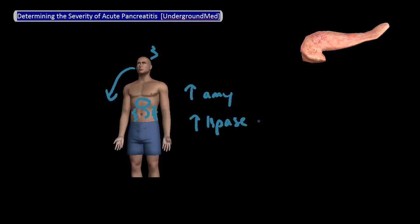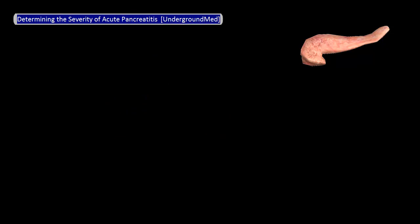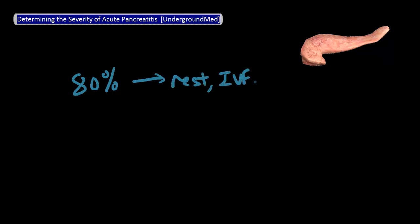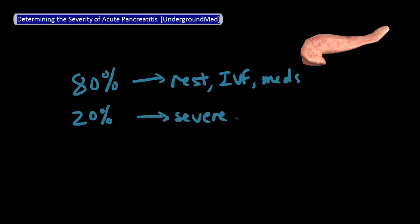So clearly this patient has acute pancreatitis. The interesting thing about acute pancreatitis is that for about 80% of cases, simple bowel rest, IV fluids, as well as pain medications is all you need, and a patient is better in about a week. But for about 20% of cases, patients can develop severe pancreatitis, which has a dramatically increased morbidity and mortality.